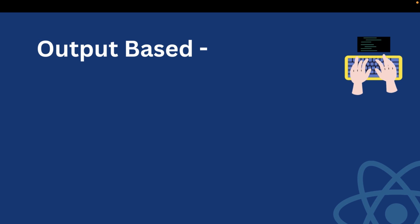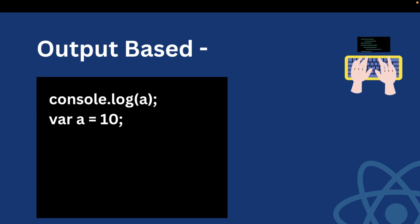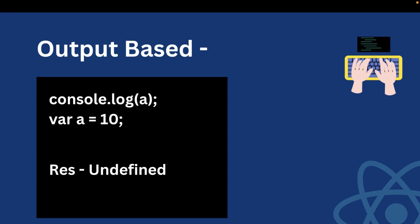The first question is based on hoisting. The interviewer gave us a particular code and asked us to guess the output. Hoisting means moving the declaration to the top, not the initialization. That's why the output we got is undefined — because we are doing console.log(a) before initialization of that variable. The declaration moves to the top but not the initialization part, so we get undefined as a result.